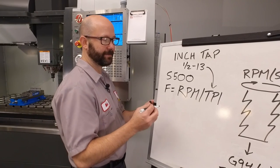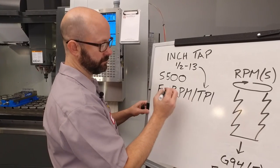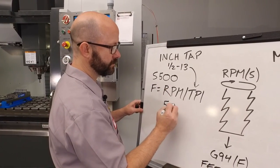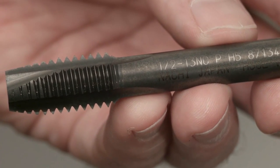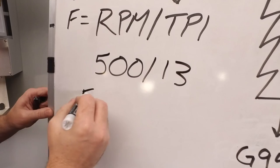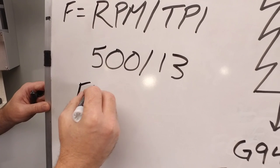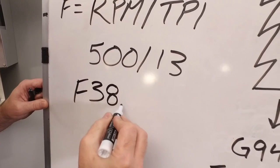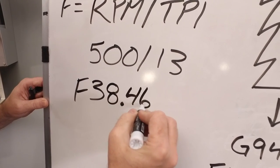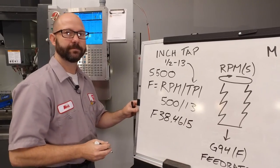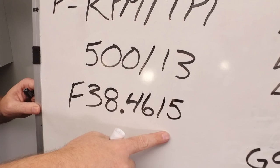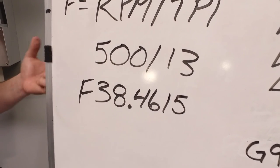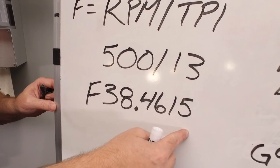Let's fill in the blanks. RPM 500. We know our TPI is 13. It was written on the tap. And if we run this through a calculator, we're going to get a G94 feed rate of 38.4615 inches per minute. Now this part's important. I rounded this number out to four decimal places because in inch mode, we can go up to four decimal places. The further we carry this number, the more accurate our threads will be.